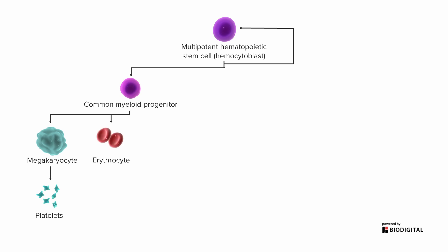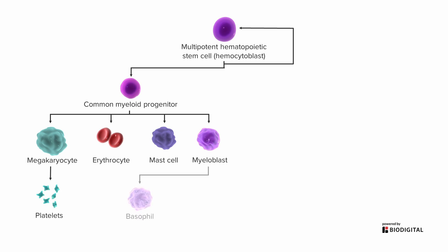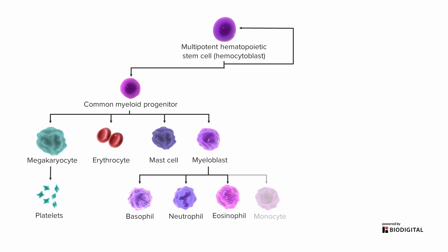Erythro just means red. We could have mast cells, or myeloblasts that will then go into further structures such as basophils, neutrophils, eosinophils, and monocytes, which all have various different functions throughout the body.